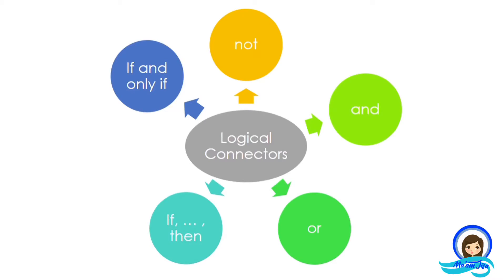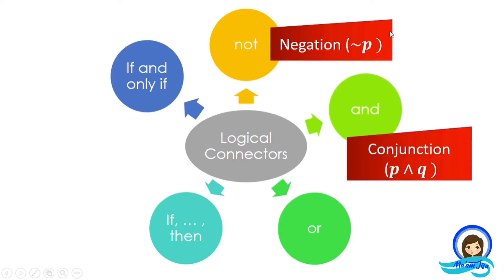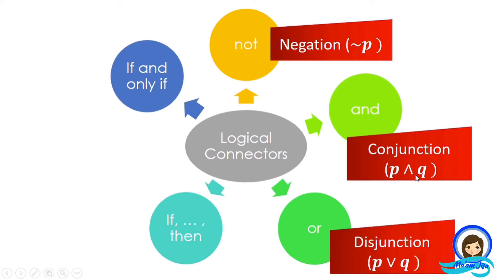Previously, I shared with you about the different logical connectors. We have the negation, represented by the symbol not P. We also have conjunction, read as P and Q, and disjunction, P or Q. For conjunction, the connective word is 'and' and its symbol is pointed upward, while for disjunction, its connective word is 'or' and its symbol points downward.